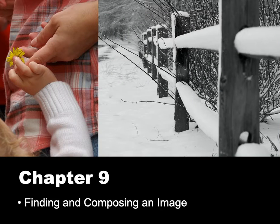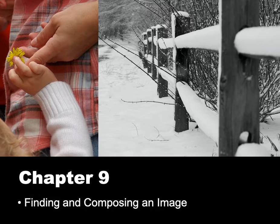Hello students! Chapter nine is all about finding and composing an image — how to best compose your shot. So far in this book we've been talking a lot about studying the theories behind all the different parameters like ISO, f-stop aperture, and shutter speed, but now let's talk about how your composition or framing of the shot is going to be almost as equally important as all of the parameters we just discussed.